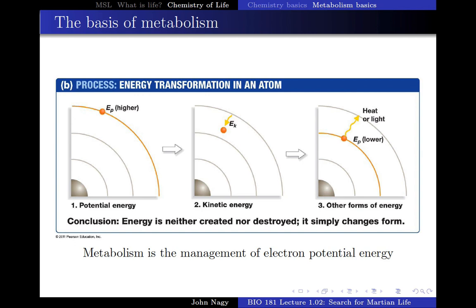You have an electron at a higher energy state — it can drop down to its ground state, and when it does so, it has to release some sort of energy. It could be heat, it could be light, it could be something else — it could be coupled to a muscular contraction mechanism that allows the muscle to contract. That's a better view of what metabolism really is: it's managing the energy states of the electrons in a living system.